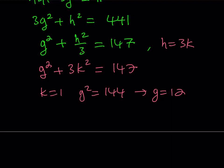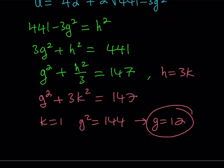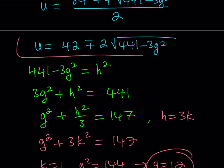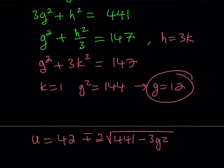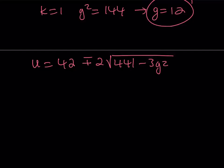We got k equals 1. We don't care about k, but we care about g. g equals 12. What am I going to do with g? I need to find x and y. But remember, we solved a quadratic in u, and u represents x and y. If I plug in the g value into this, I'll be getting the x and y values. So u equals 42 plus minus 2 times the square root of 441 minus 3g squared. I'm going to replace g with 12.